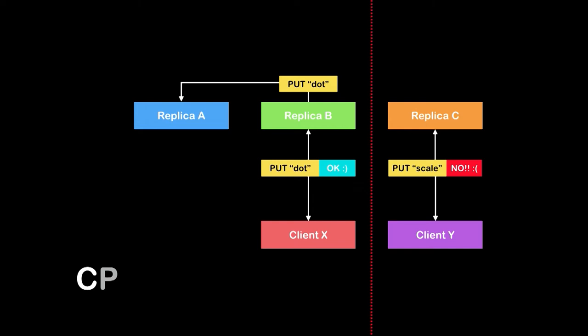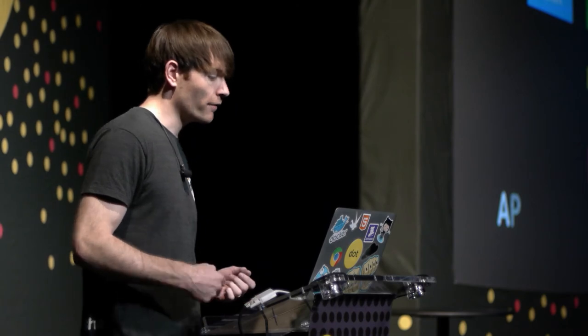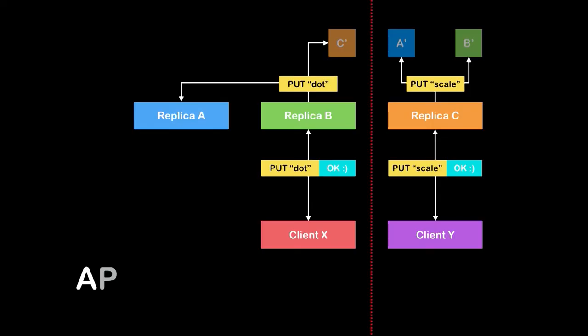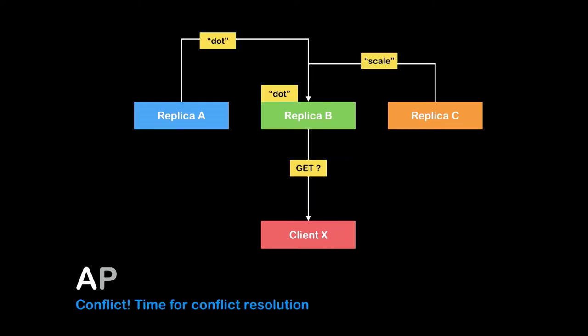In a partition state, a consistent system must decide how to prevent inconsistency. A common way is to have a majority-wins approach, where a minority of servers refuse operations while the partition state is resolved. An available system can handle a partition state by still accepting operations on data and allowing multiple versions of the same value. Resolution of that inconsistency occurs when the system is no longer in a partition state.